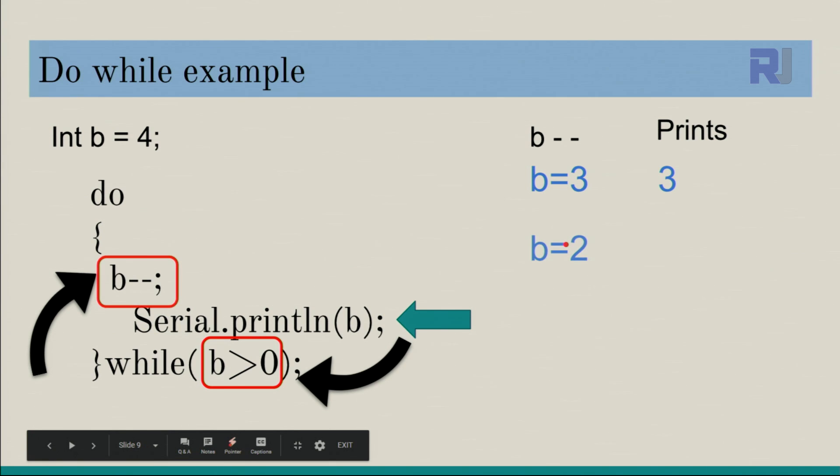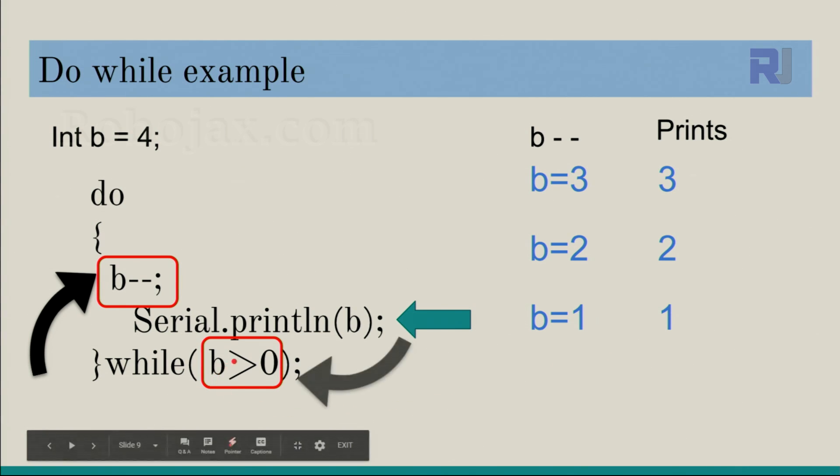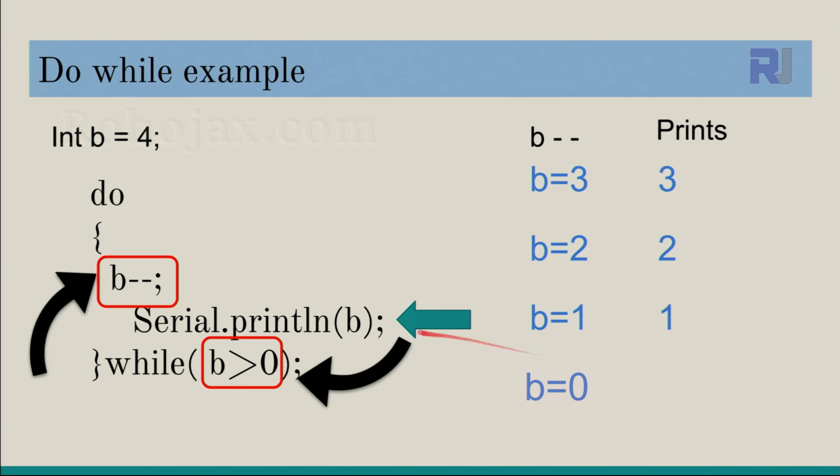And then after that, compare. Is b bigger than zero? True. Goes here, decrement. B becomes two, prints two. Compare, is two bigger than zero? True. Decrement, become one, print one. Is one bigger than zero? True. Then decrement, b becomes zero, zero, and then print zero. Because after this we print it, then we come here. Is zero bigger than zero? False. Immediately exit.